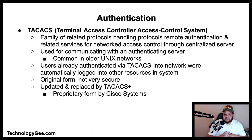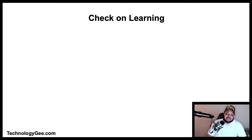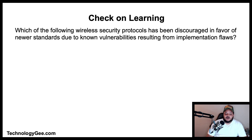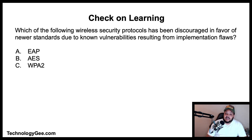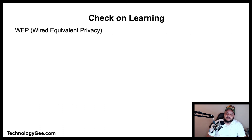Now let's do some check-on-learning. Question one: which of the following wireless security protocols has been discouraged in favor of newer standards due to known vulnerabilities resulting from implementation flaws — EAP, AES, WPA2, or WEP? The correct answer is WEP, or Wired Equivalent Privacy.